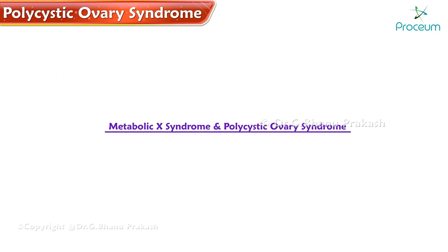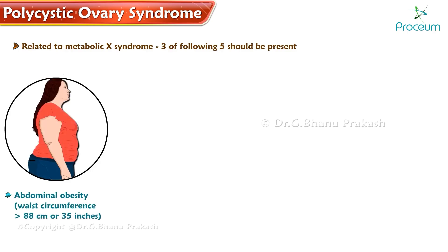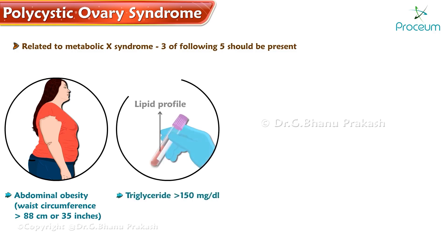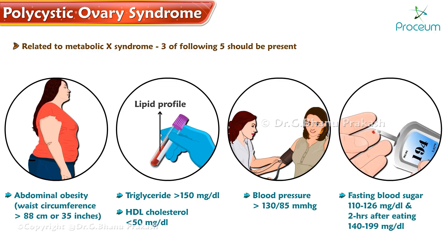Polycystic ovary syndrome is related to Metabolic X Syndrome. Any three of the following five should be present to diagnose Metabolic X Syndrome: abdominal obesity with waist circumference greater than 88 centimeters or 35 inches; triglycerides greater than 150 mg/dL; HDL cholesterol less than 50 mg/dL; blood pressure greater than 130/85 mmHg; fasting blood sugar of 110–126 mg/dL or two-hour postprandial blood sugar of 140–199 mg/dL.